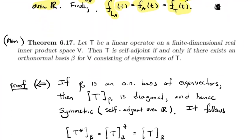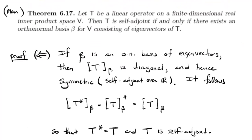Now we state and prove the main theorem: for operators on finite dimensional real inner product spaces, they admit an orthonormal basis of eigenvectors if and only if they're self-adjoint. So if T is an operator on a finite dimensional real inner product space, T is self-adjoint if and only if there's an orthonormal basis consisting of eigenvectors.